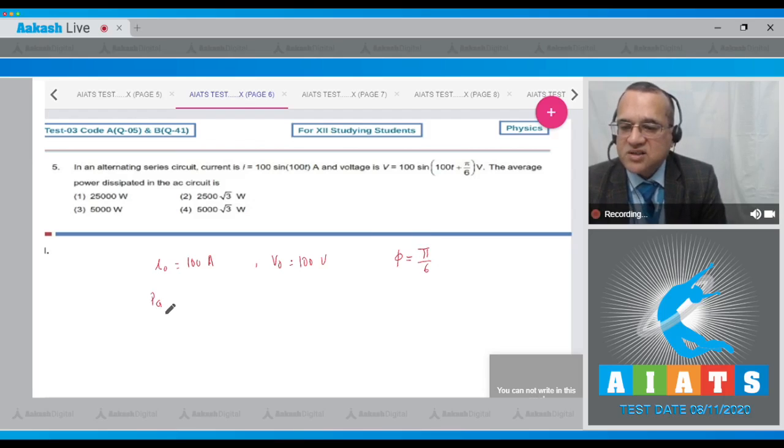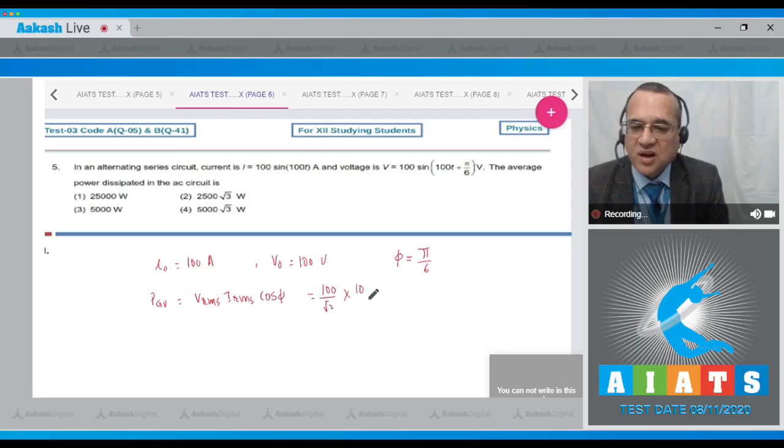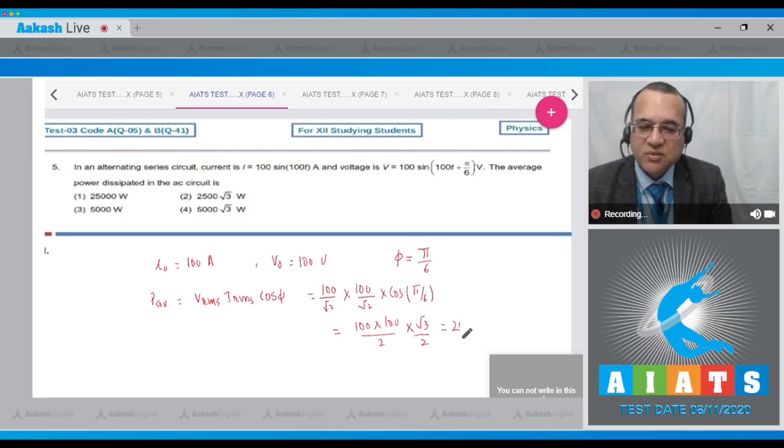And what is the power consumption? This is equal to VRMS, IRMS, and the cos of phi. What is VRMS? 100 divided by root 2. What is IRMS? 100 divided by root 2. What is cos phi? Phi is pi by 6. So this becomes 100 into 100 by 2 and root 3 by 2. This becomes equal to 10,000 by 4, which is 2500. So 2500 along with the root 3, that is the power consumption of the circuit. The answer to this question is option number 2.